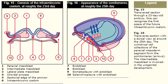This transverse section through a 23-day-old embryo shows the first space of the future intraembryonic coelom. Number one is the para-axial mesoblast, number two is the intermediate mesoblast, number three is the lateral plate mesoblast, number four is the cordal process. By the 25th day of development, number five is the sectional edge of the amnion, number six is the intraembryonic coelom, and number seven is the endoblast.